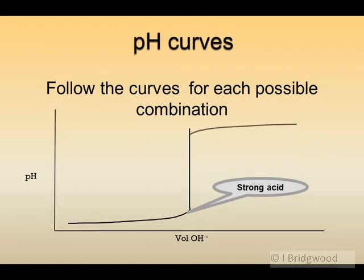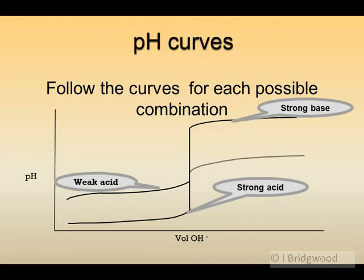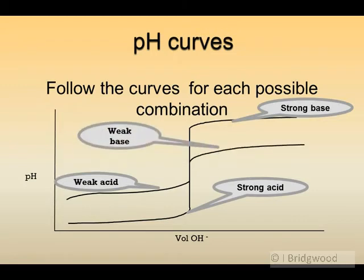There you've got a strong acid curve and, of course, you've got the strong base curve at the other end as well. Weak acids, higher pH and weak bases will tend to tail off to a lower pH than a strong base.